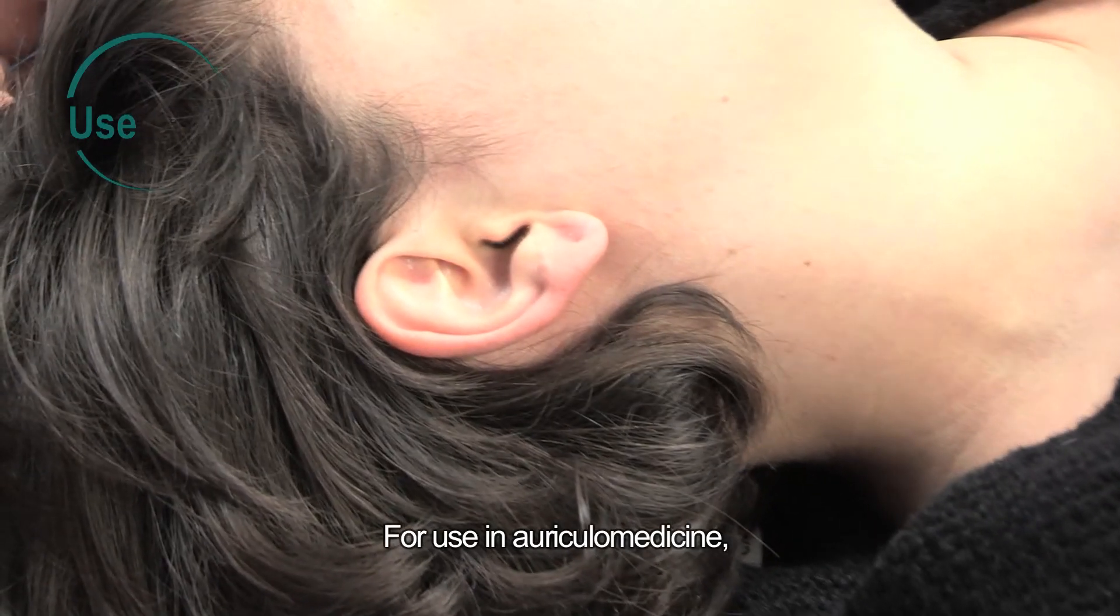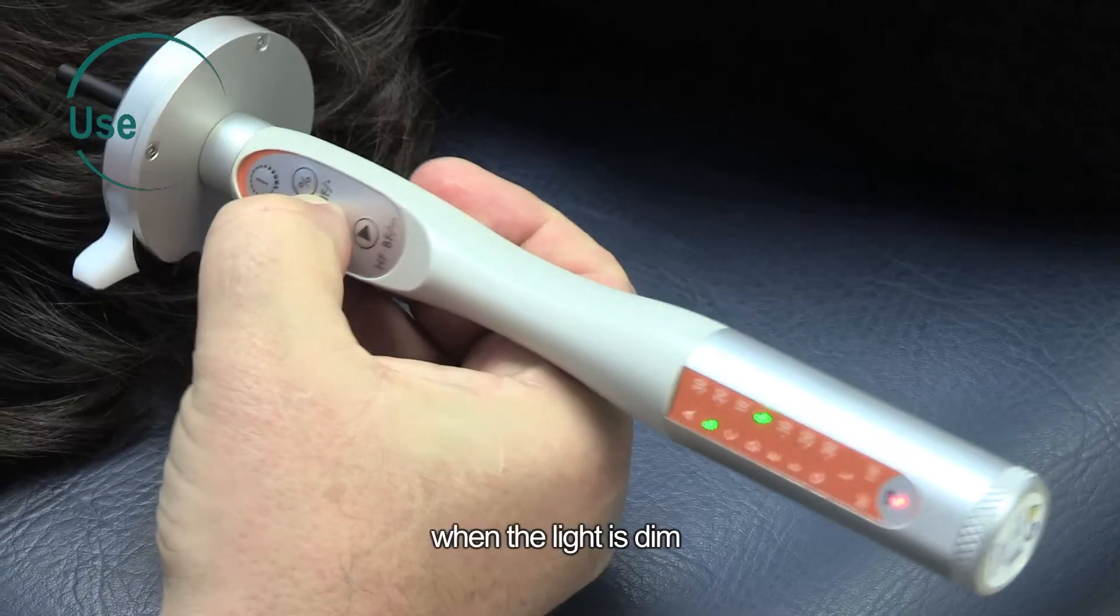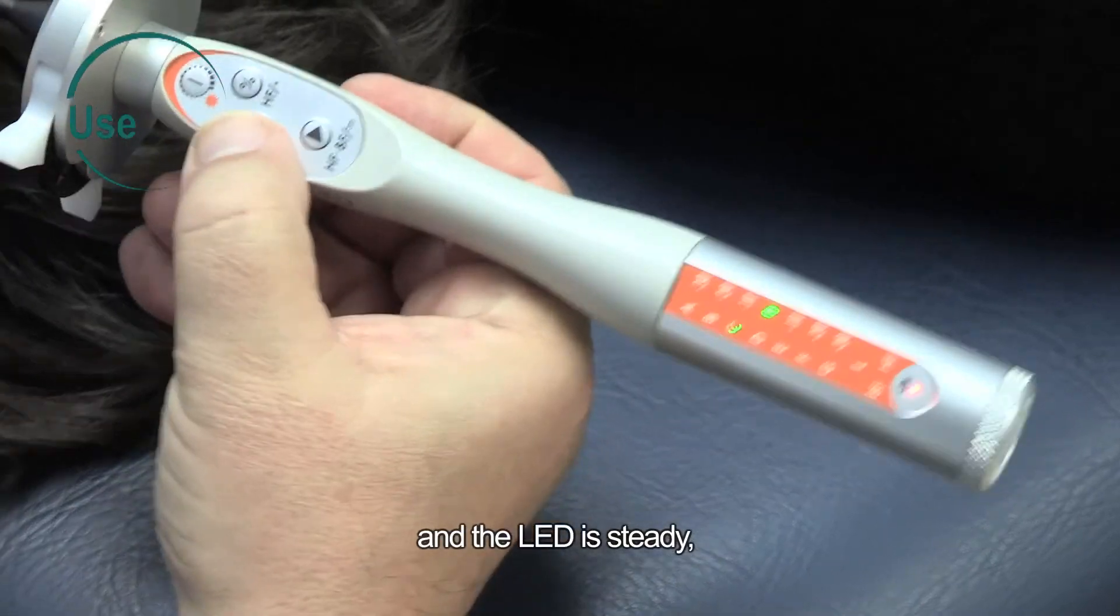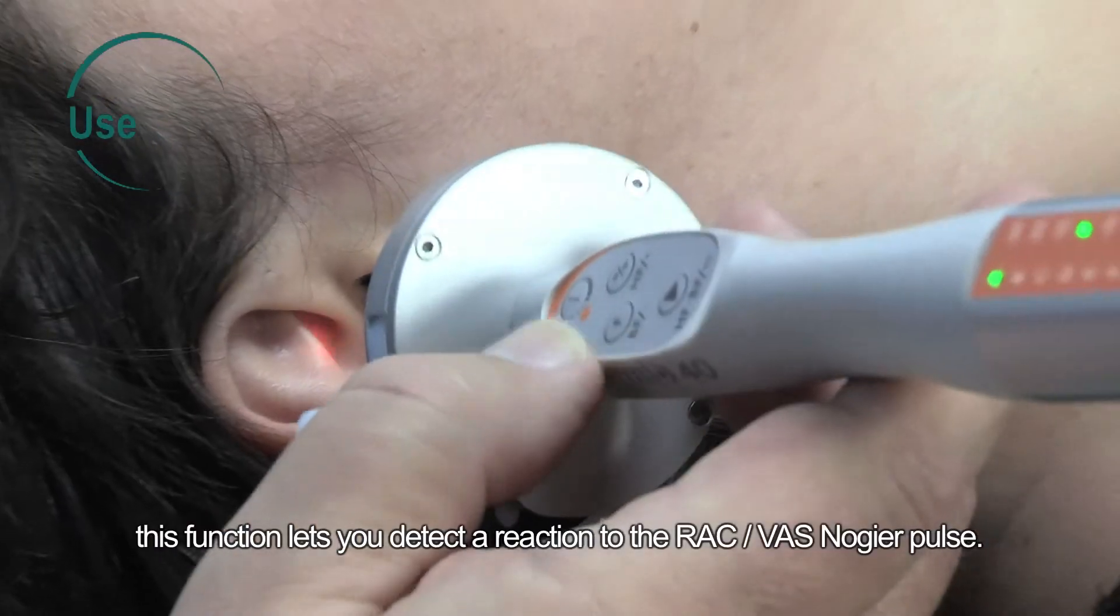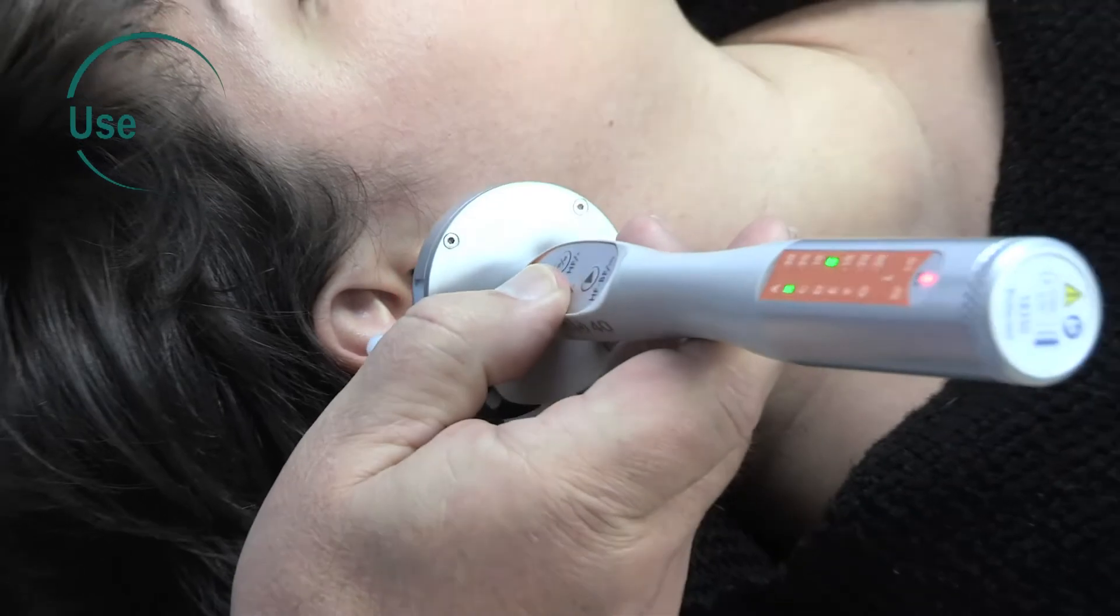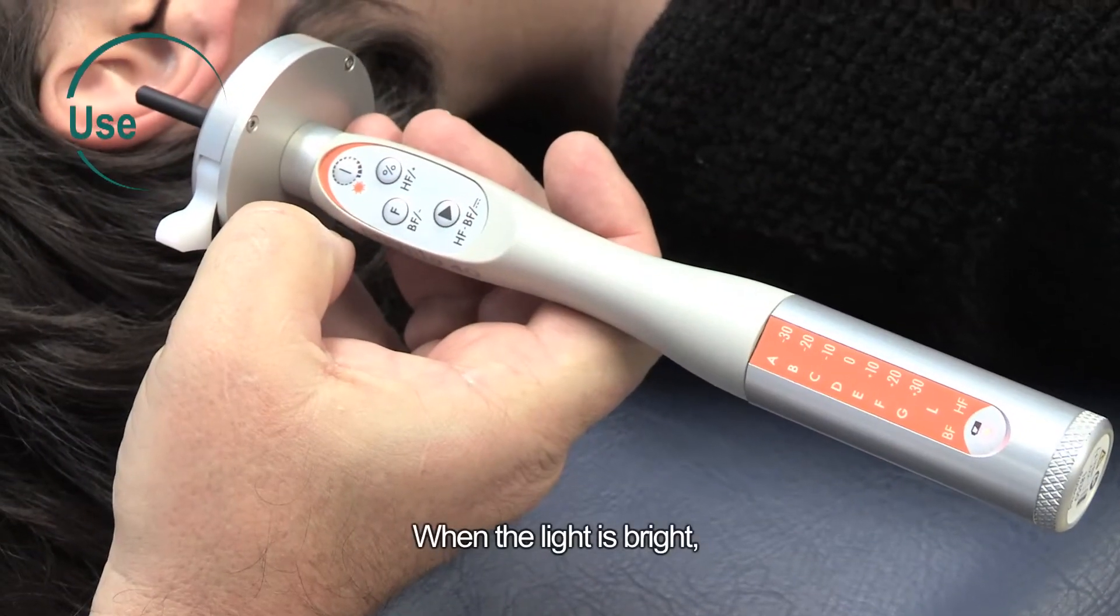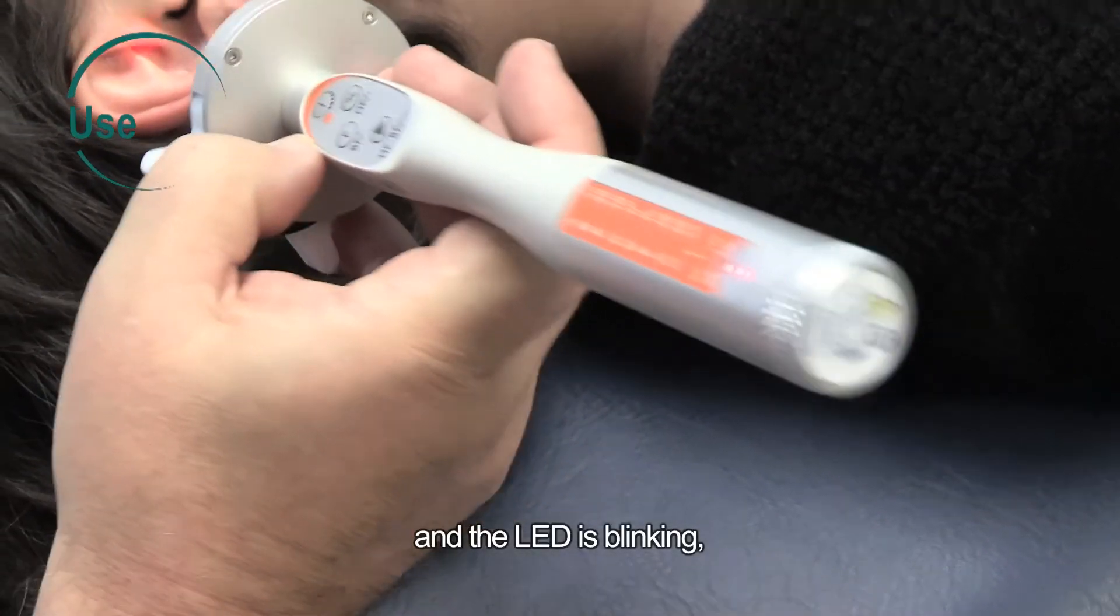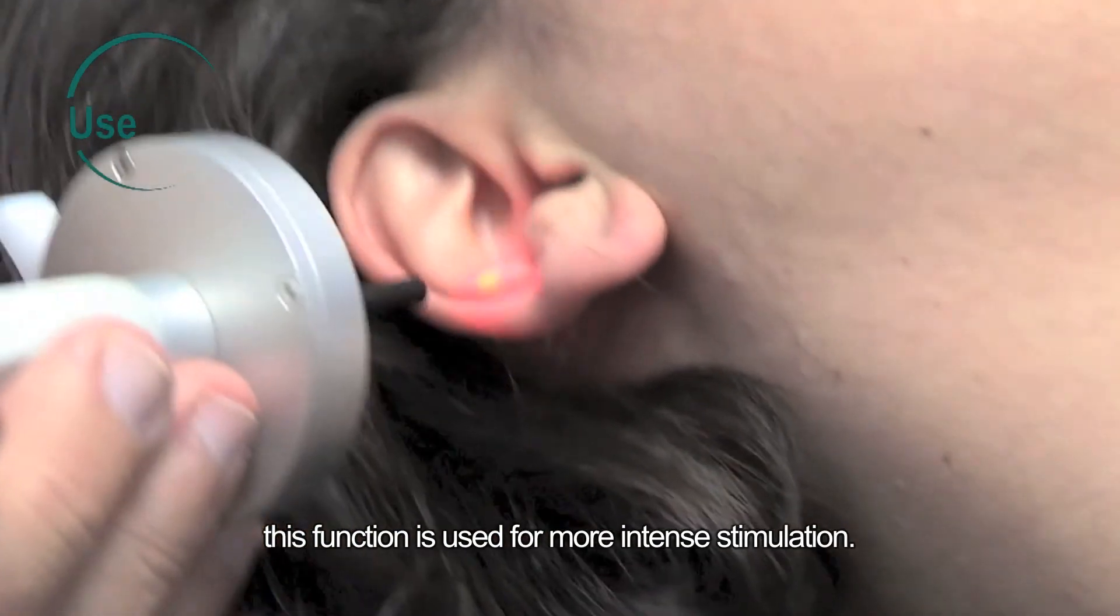For use in auricular medicine, when the light is dim and the LED is steady, this function lets you detect a reaction to the Rack-Vas Nogia pulse. When the light is bright and the LED is blinking, this function is used for more intense stimulation.